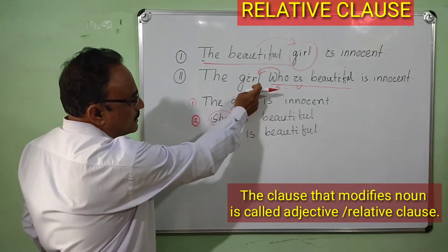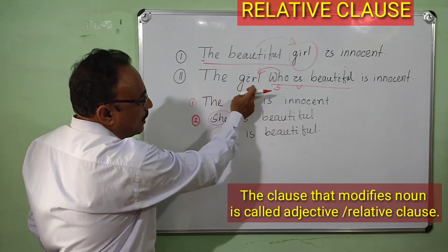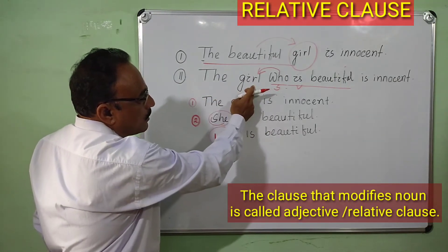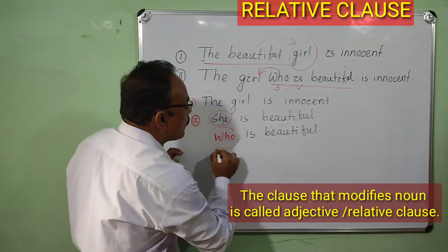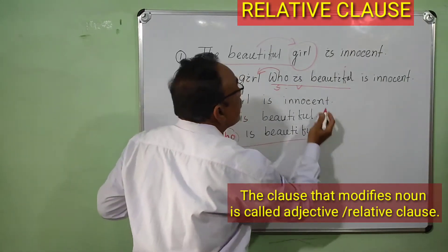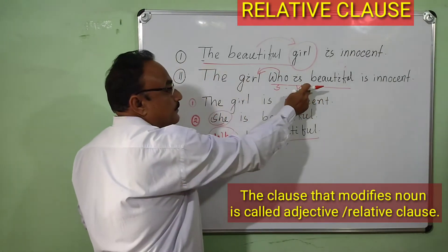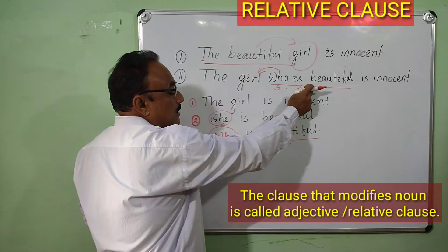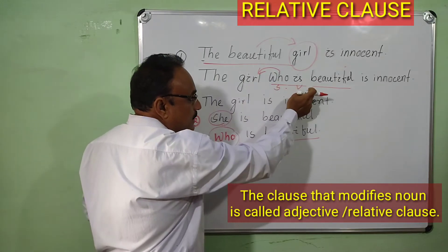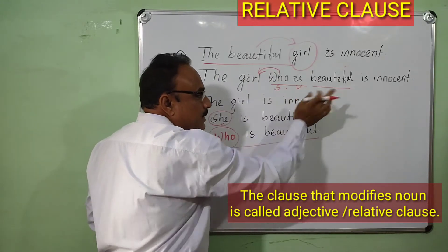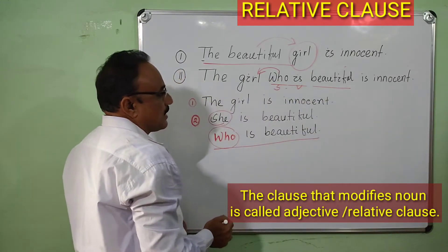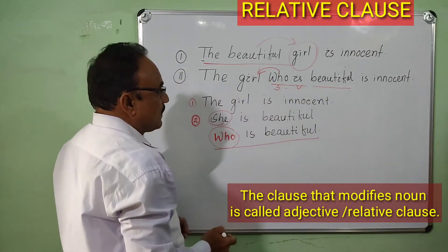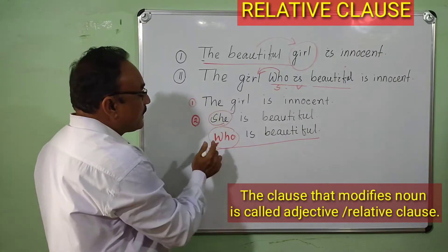Look at this sentence: 'The girl is beautiful.' We can combine these two independent clauses into one sentence using a relative pronoun.